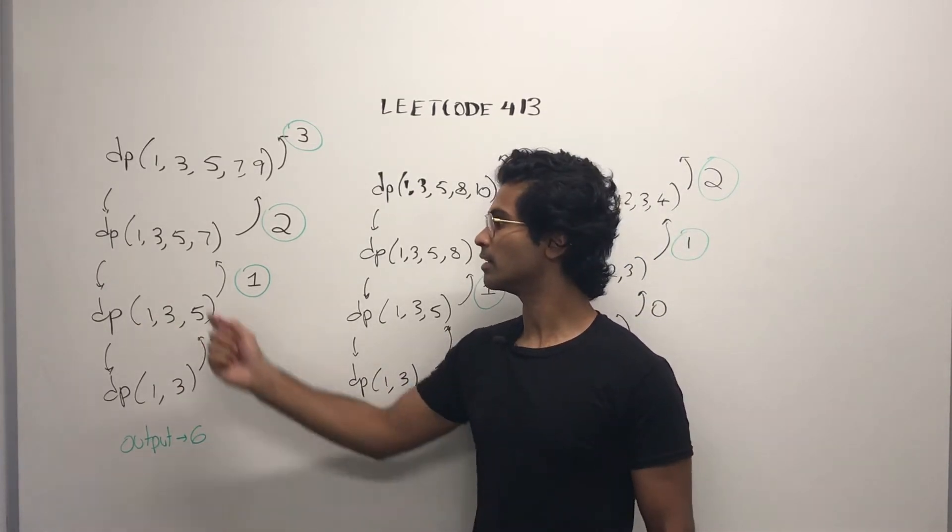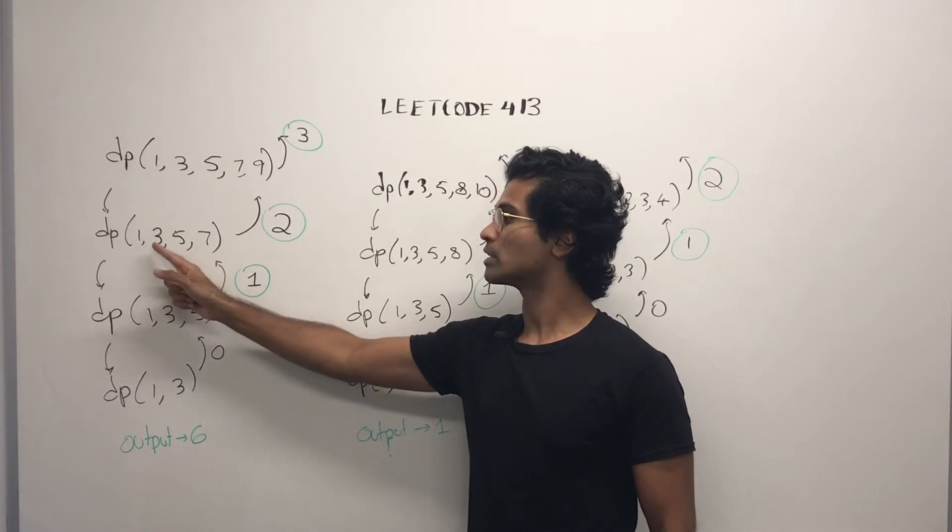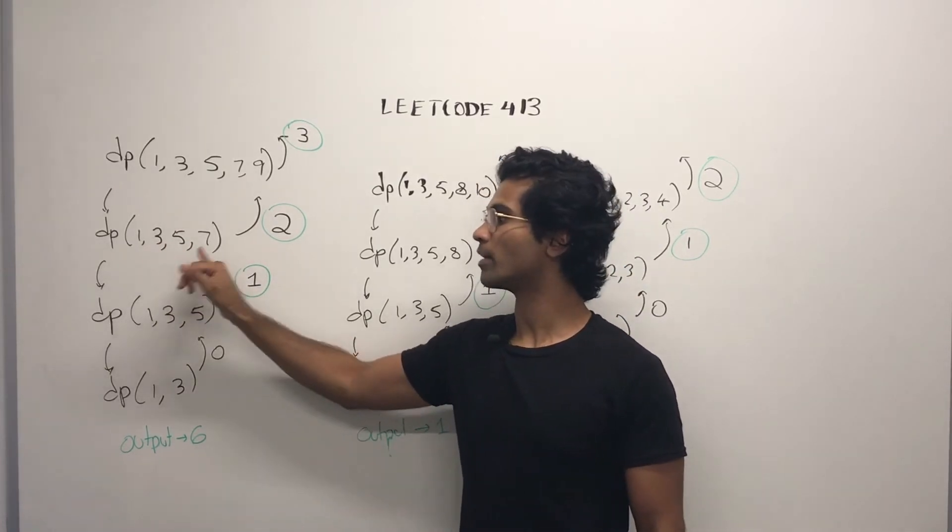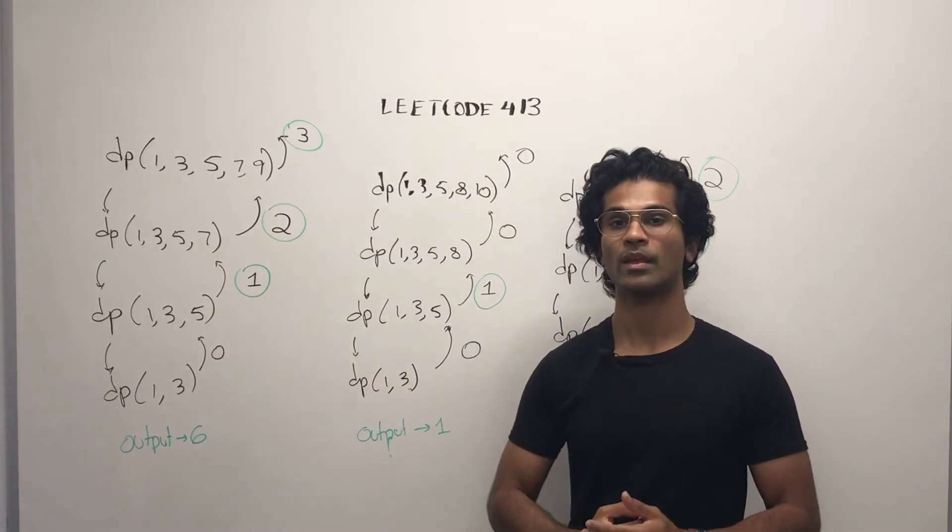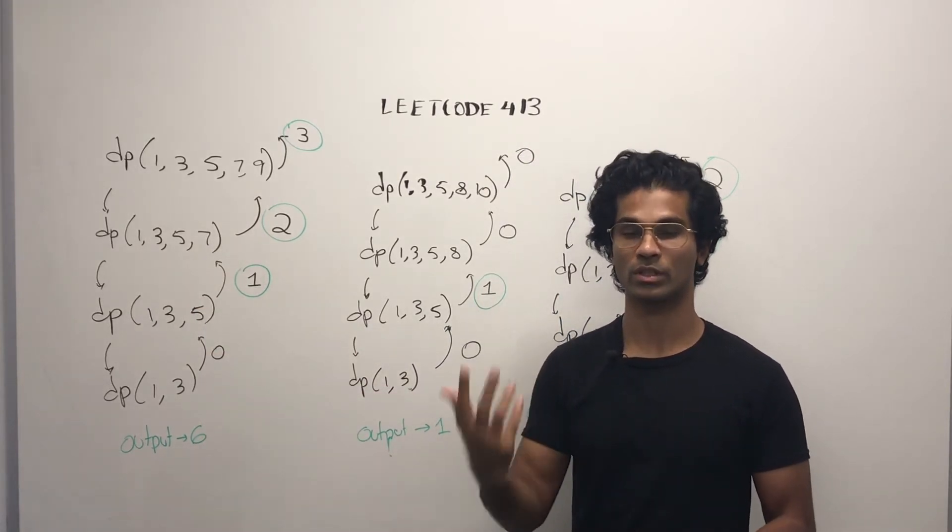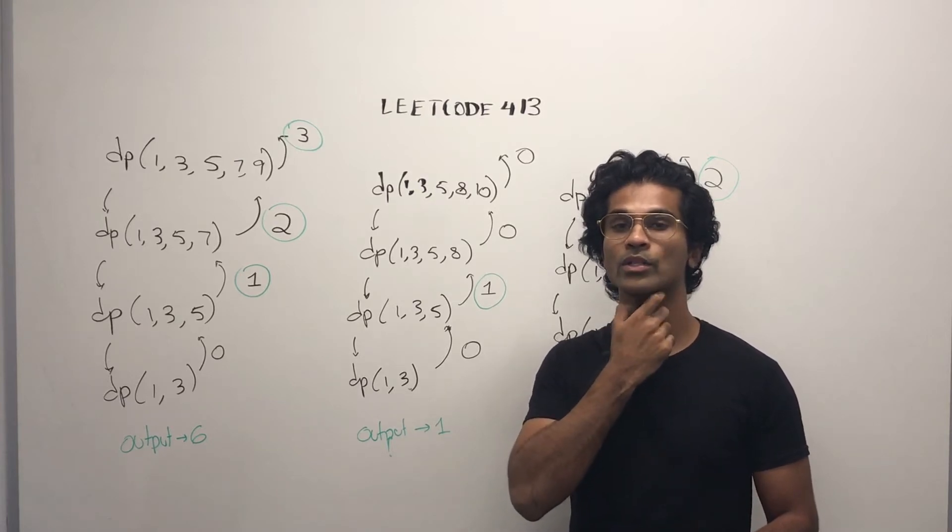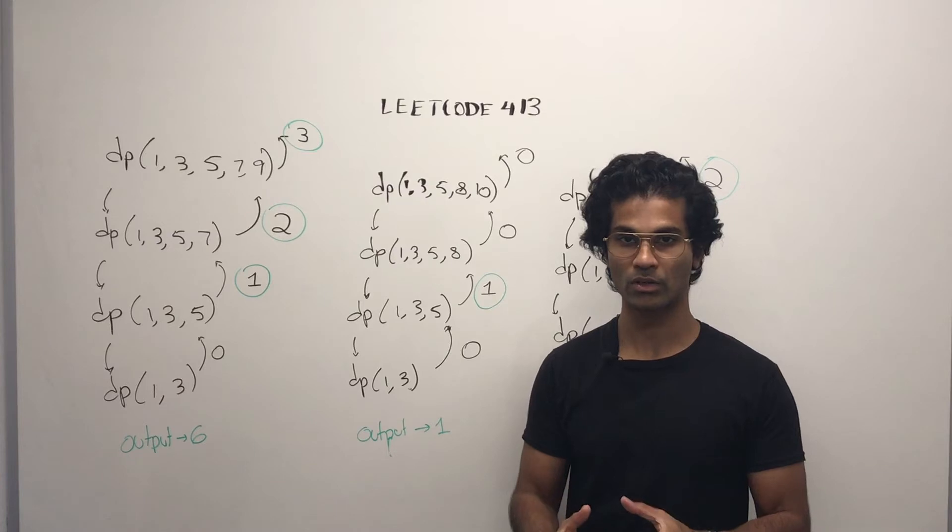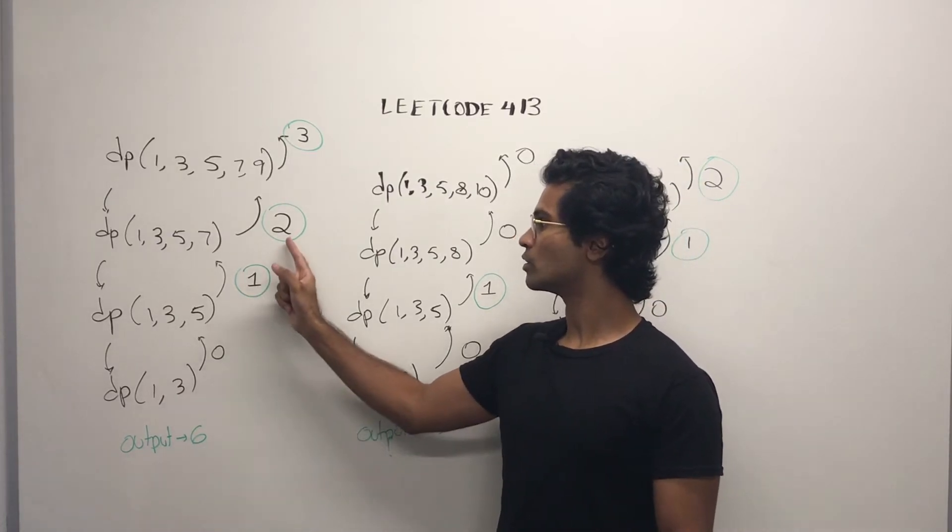1, 3, 5 is valid. 1, 3, 5, 7 is also valid. And then we have 1, 3, 5, 7 that's also valid. So if we have non-zero returns, then we know that, okay, we are going to add these up cumulatively. And we're going to add 1 to whatever was returned to us. So 1, 2, and 3.